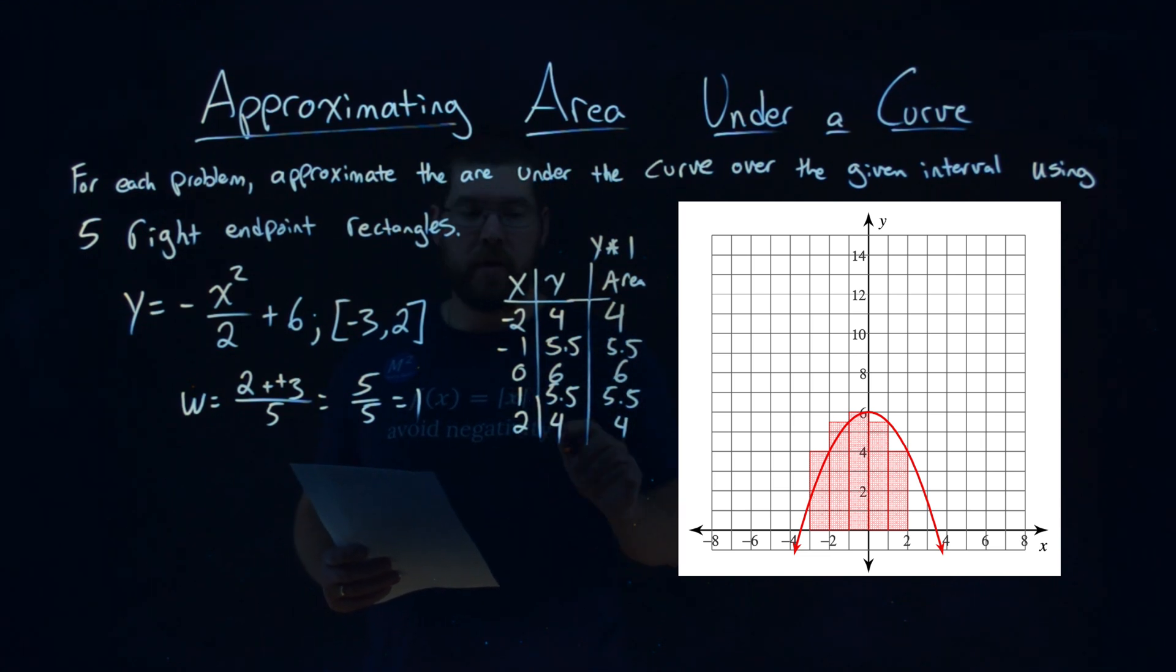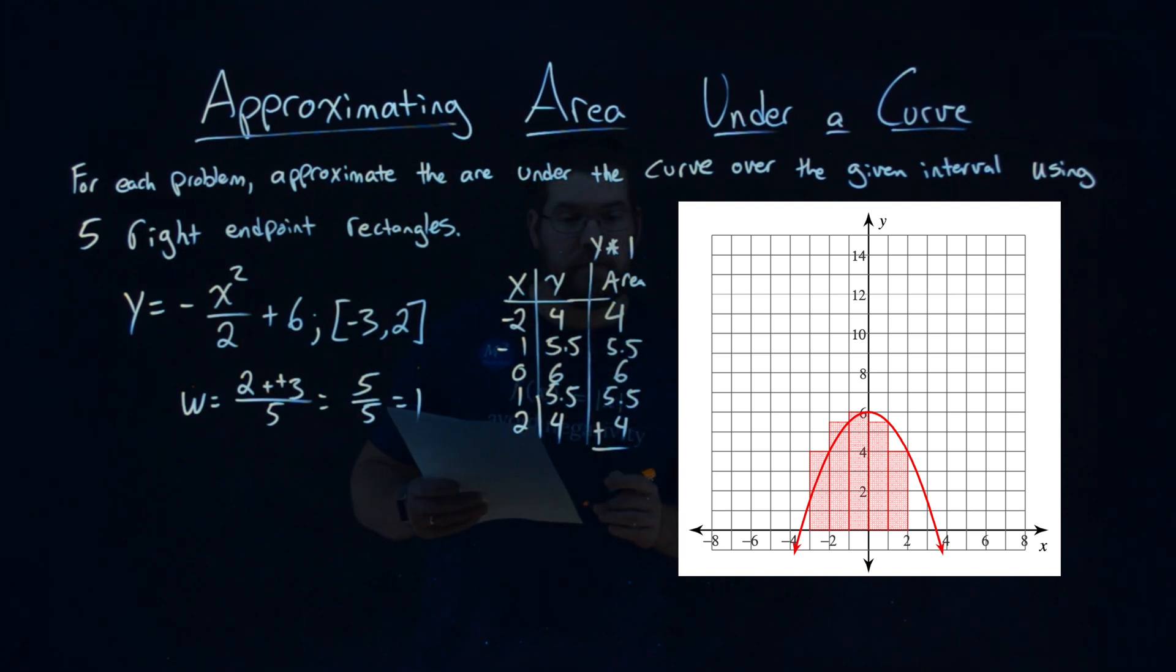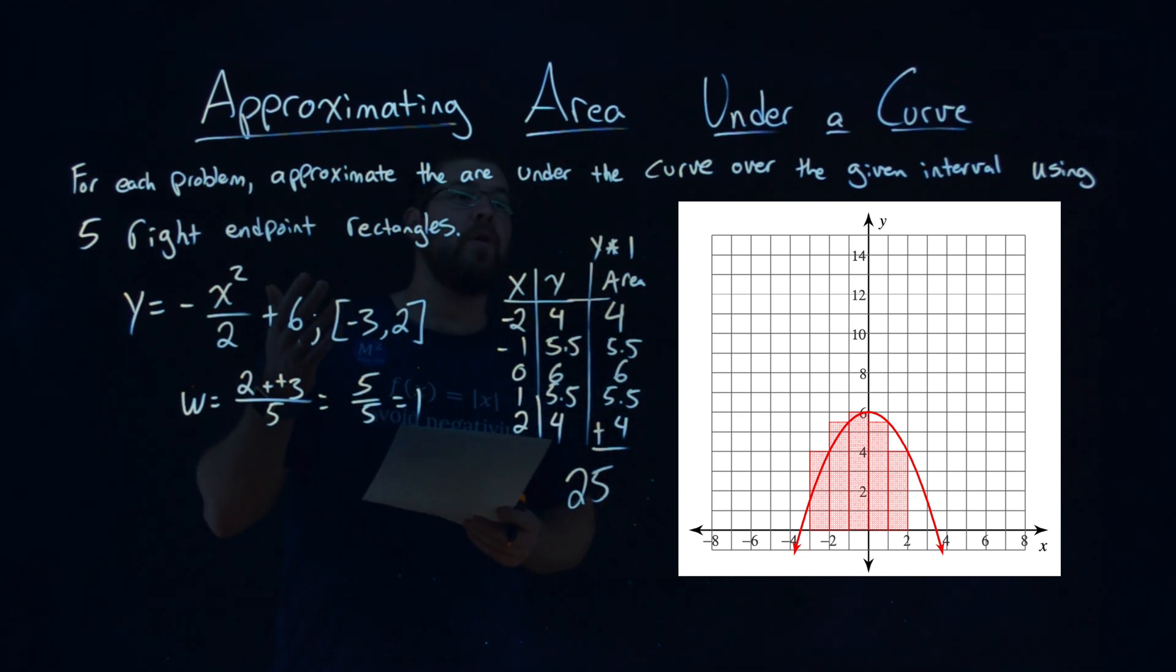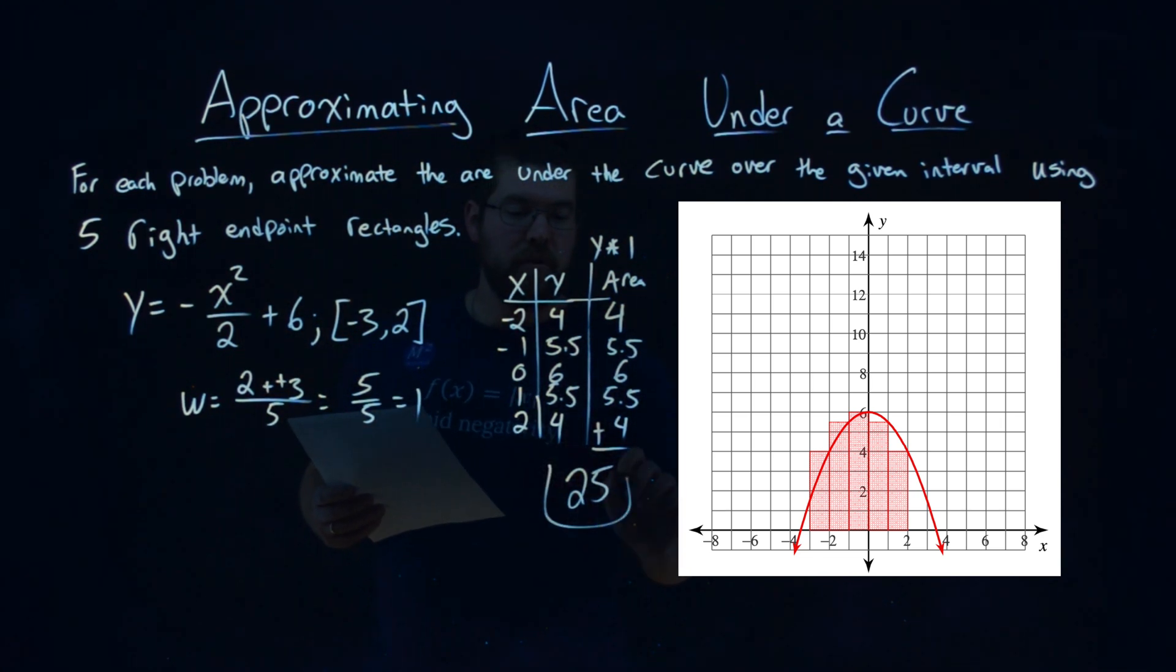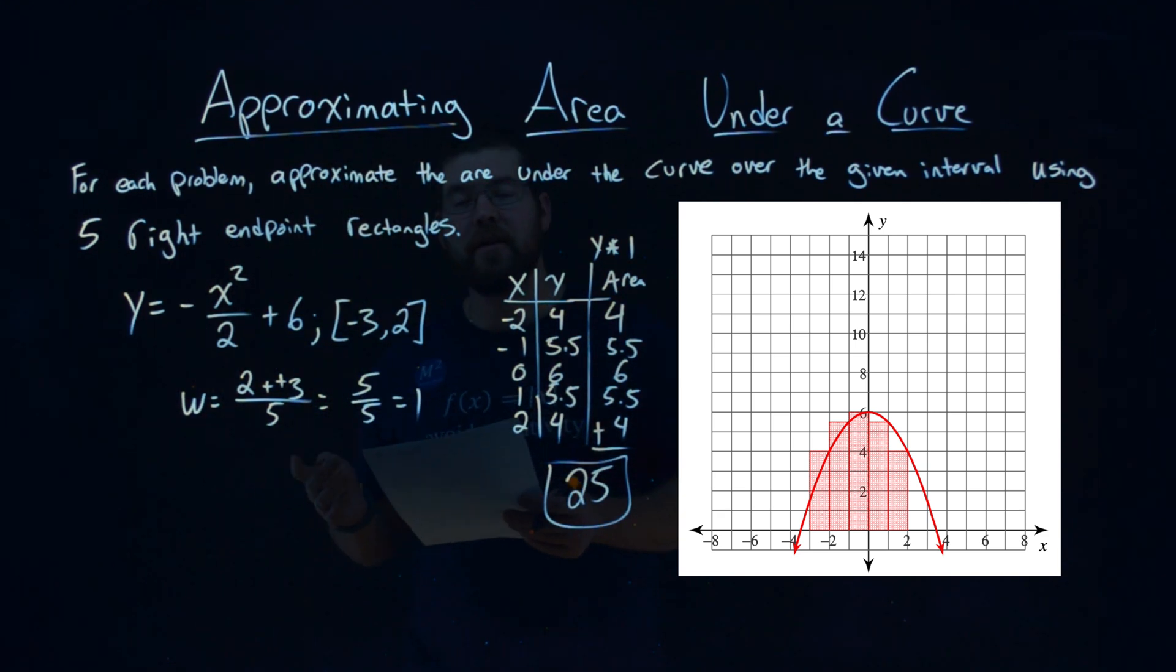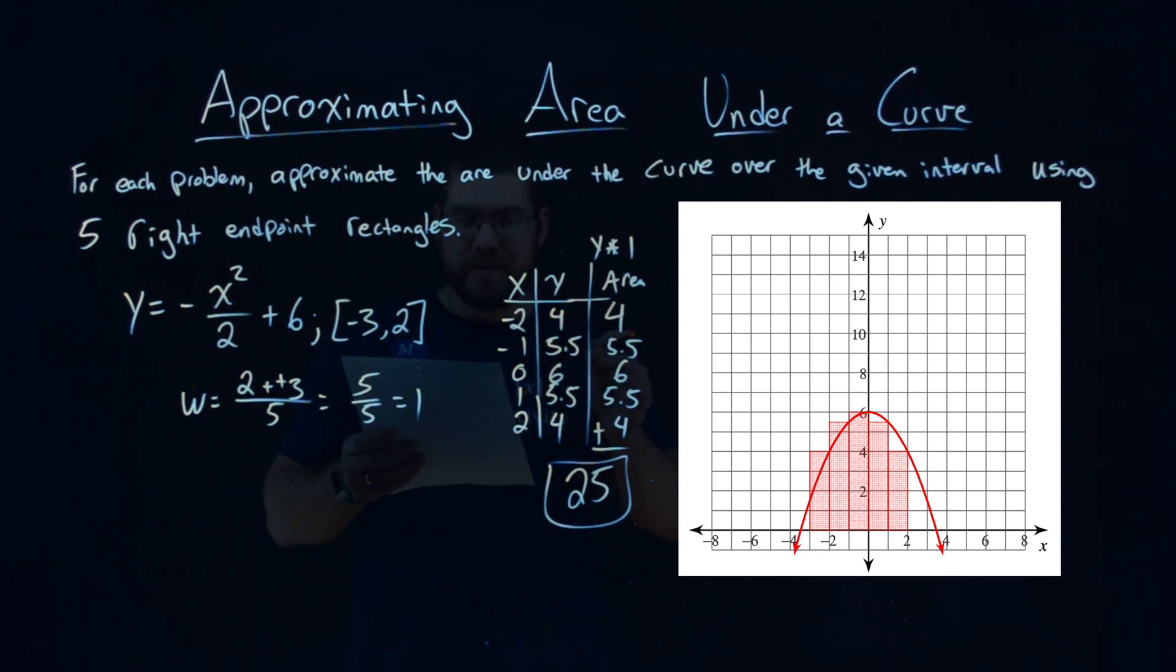4 plus 5.5 plus 6 plus 5.5 plus 4 equals 25. And so the area of all the rectangles using five right endpoint rectangles to approximate the area of the curve is 25.